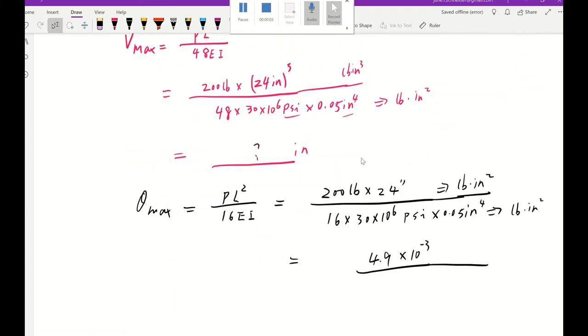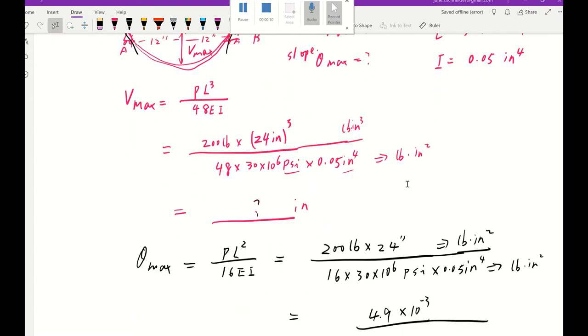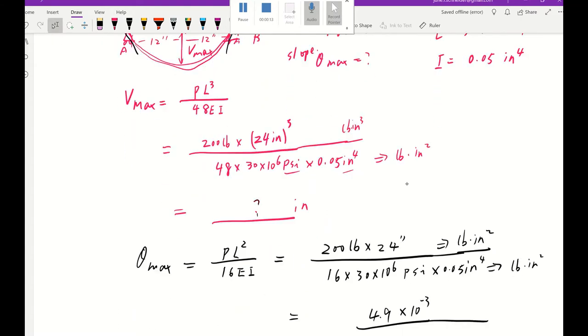Hello, I just realized there's a mistake I made for the previous one, for beam deflection example 1. The mistake happens here, this is 24 squared. So knowing that, I'm going to actually put it into a calculator. 200 times 24 squared divided by 16, divided by 30, then divided by 0.05. So the answer here is 4.8 times 10 to negative 3. So that would be a little quick correction for this video. Bye.